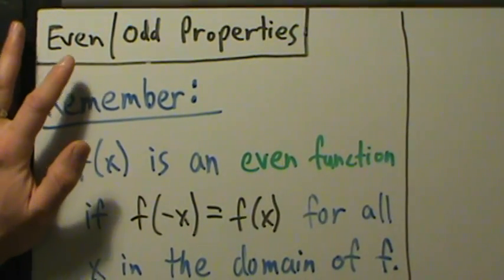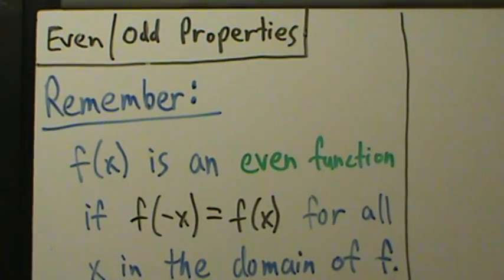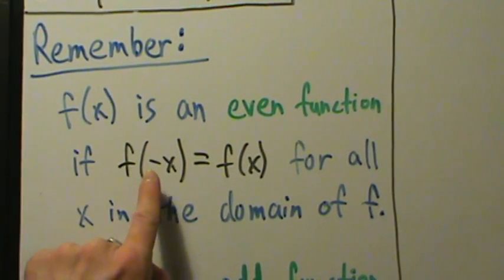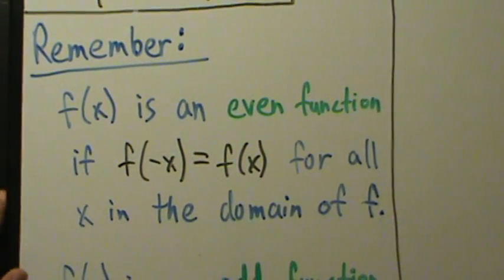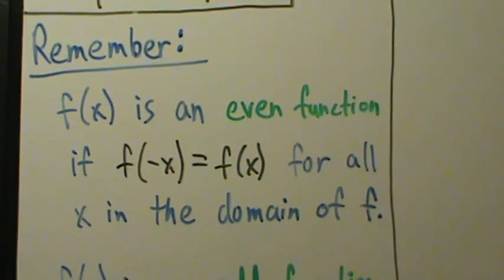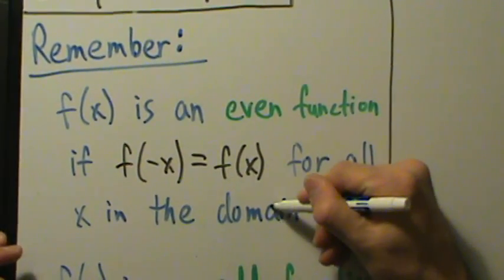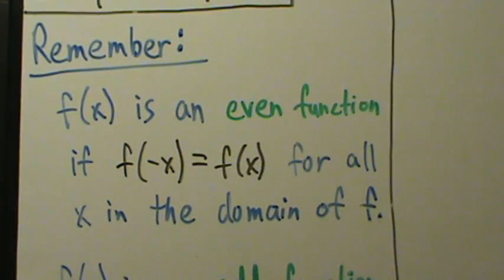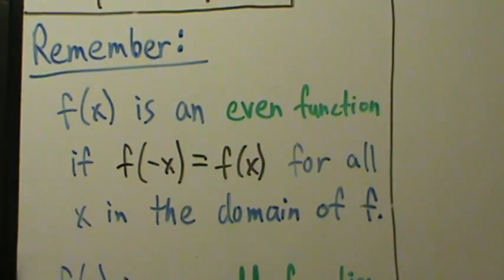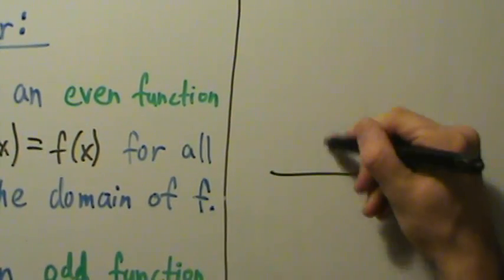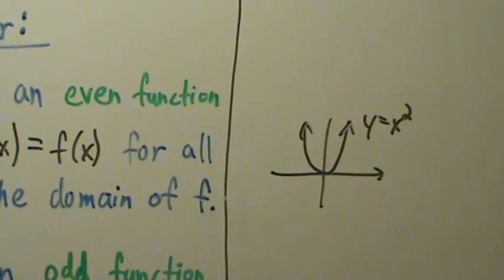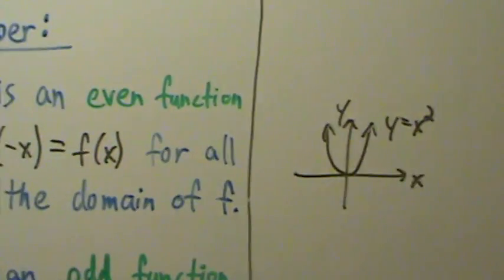Now we want to start talking about the even and odd properties of the trig functions. Remember from pre-calculus, a function f of x is called an even function if f of negative x equals f of x for all x in the domain of f. We haven't talked about domains of trig functions yet, but we'll cover that later when we talk about graphs. Even functions are symmetric over the y-axis — something like y equals x squared.